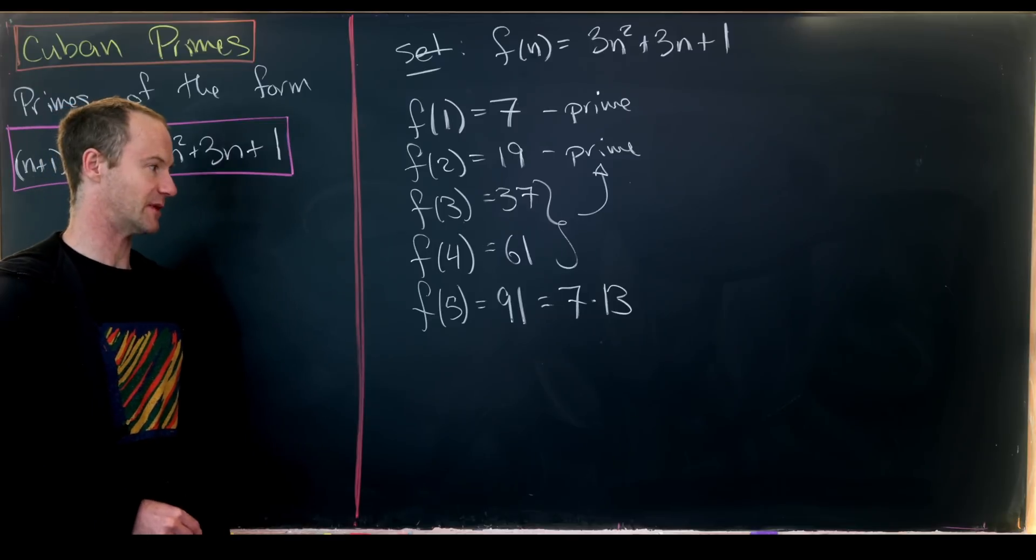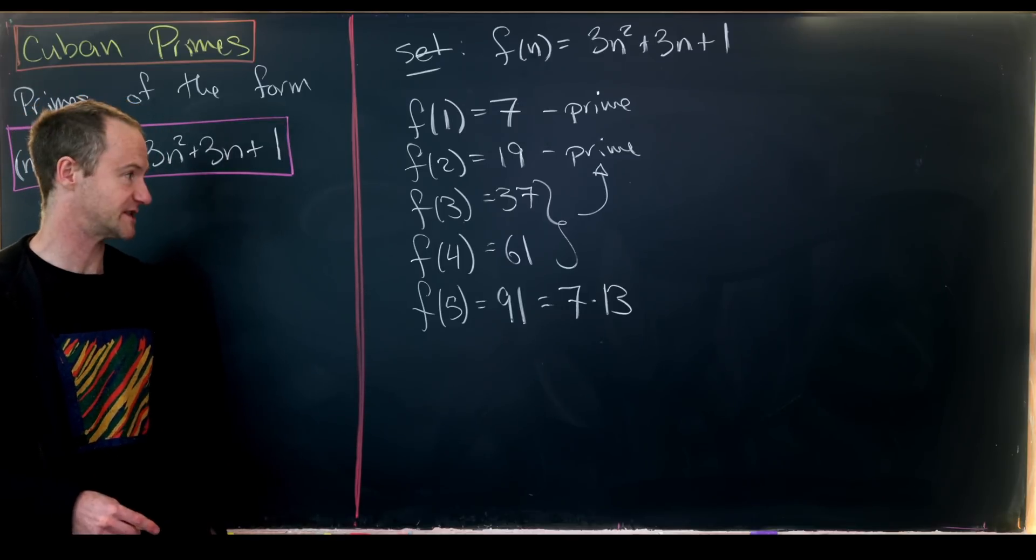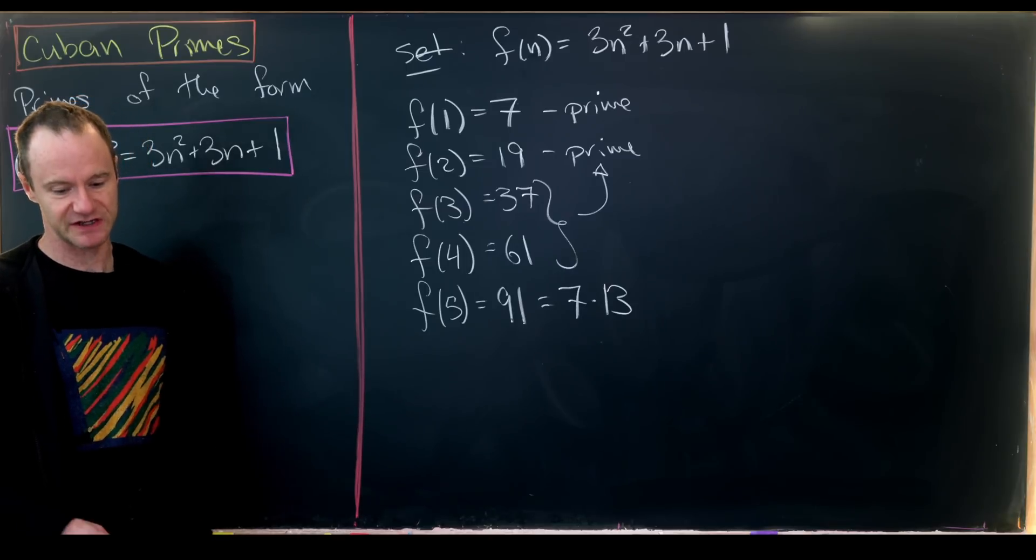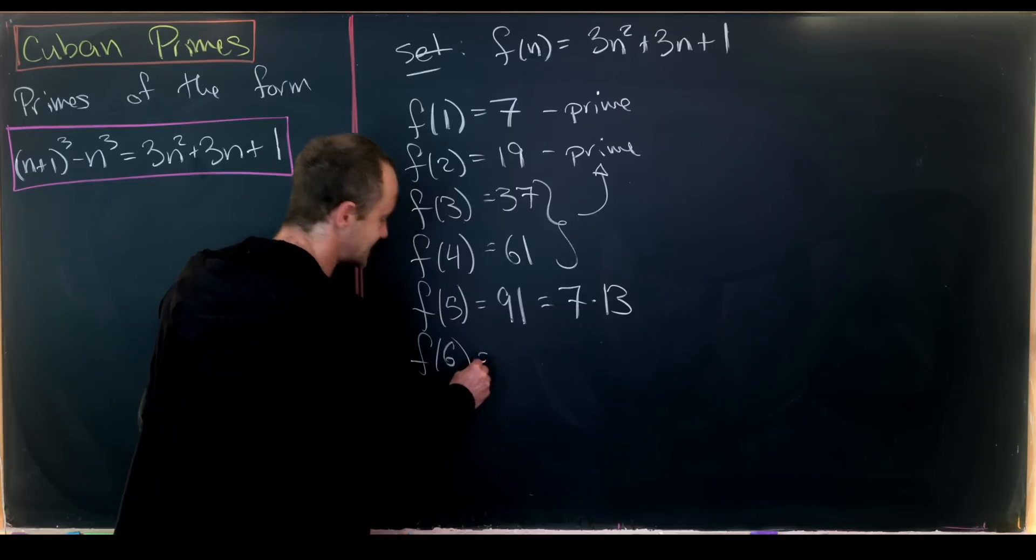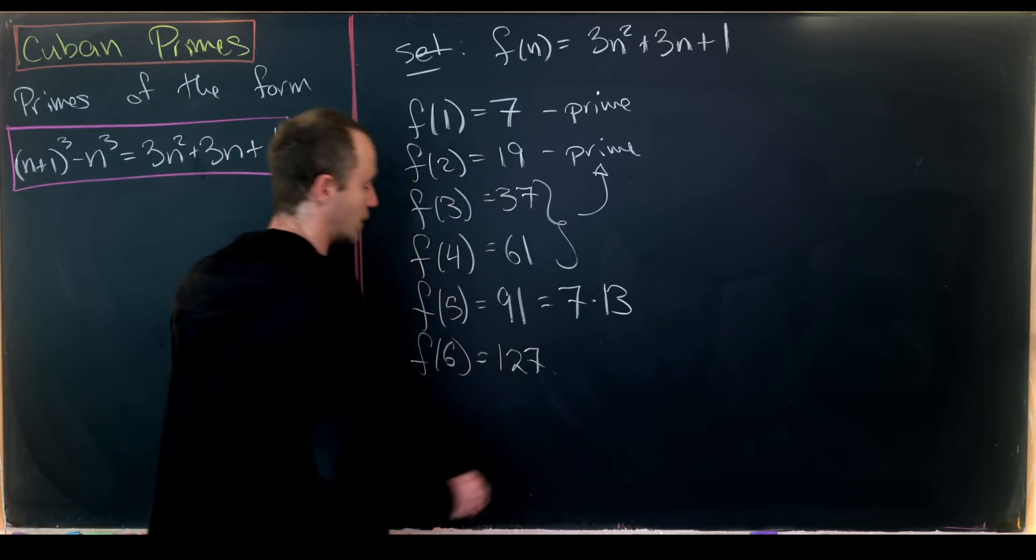So we don't always get a prime number, which makes sense given that there's no function that always generates primes. But f(6) = 127, which is prime.